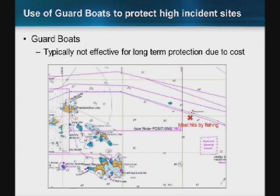From a submarine cable operator perspective, one option is deploying guard boats. Given the vastness of the ocean and tens of thousands of kilometers of subsea cable, they're typically not effective for long-term protection — you can't deploy a guard boat to cover every area. Where this is particularly useful is when a major event occurs and a portion of the cable system is taken out: you strategically deploy guard boats to ensure no additional faults occur until the repair is complete.